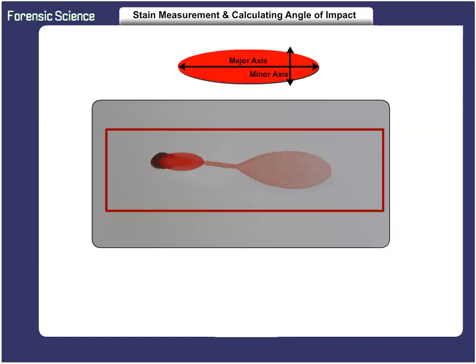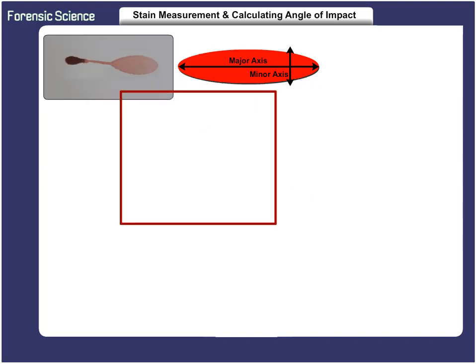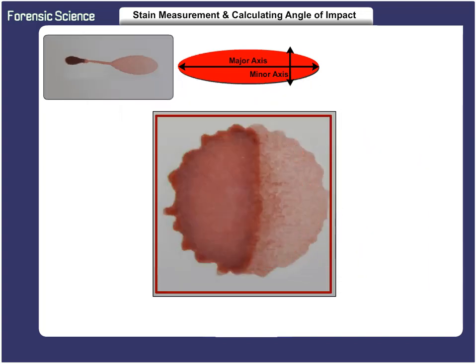We have demonstrated how to measure and calculate the angle of impact of an acute angle stain. Acute angle stains are elongated and elliptical in shape. Now we will demonstrate how to measure and calculate the angle of a more circular-shaped stain. If the angle of impact is 90 degrees, then the blood drop is in the shape of a circle, not an ellipse.